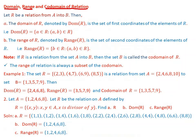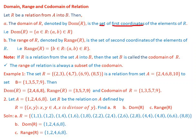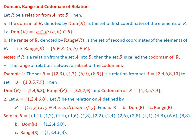Domain, range, and co-domain of a relation. Let R be a relation from set A into B. The domain of R, denoted Dom(R), is the set of first coordinates of the elements of R. That is, the domain of R is the set containing all a such that the ordered pair (a, b) is an element of R. The first coordinates of the elements of R are called the domain of R.